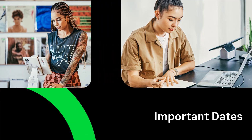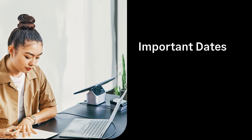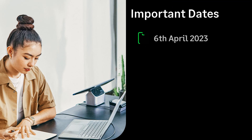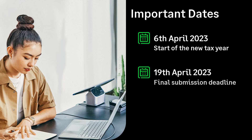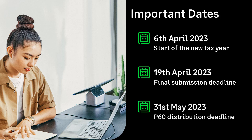Let's look at some of the important dates over payroll year end. 6th April is the start of the new tax year. Please note you can process any pay runs in the new tax year even if you have not completed your year end. 19th April is your deadline for your final EPS submission of the tax year. 31st May is the date your employees should have received their P60s.